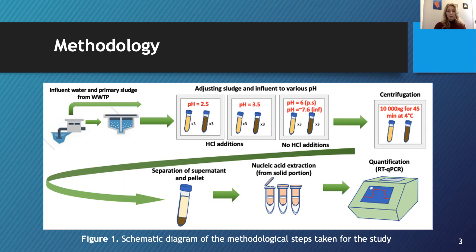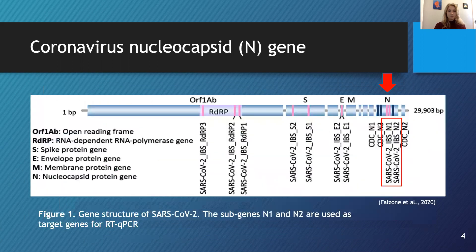Approximately 0.25 grams of each pellet sample was drawn, and extraction was performed using the RNA-Z Power Microbiome Kit. The final flow-throughs containing the eluted RNA were used for RT-qPCR analyses to detect and quantify the viral genes and compare recovery rates from each pH level. The amplified genes used were N1 and N2, corresponding to different regions of the coronavirus nucleocapsid protein, which is targeted because it has the most abundant SARS-CoV-2 RNA. The average of these genes can therefore be used to measure the virus in wastewater.